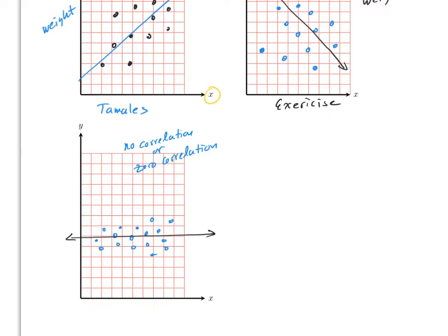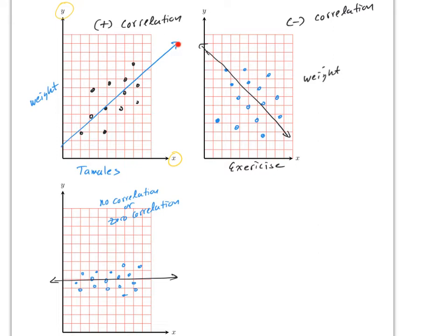If the line is going up, the slope was positive — hence positive correlation. If the graph was going down, the slope was negative — hence negative correlation.